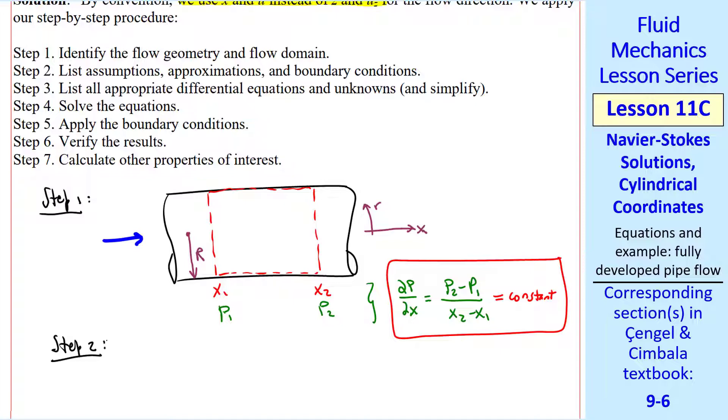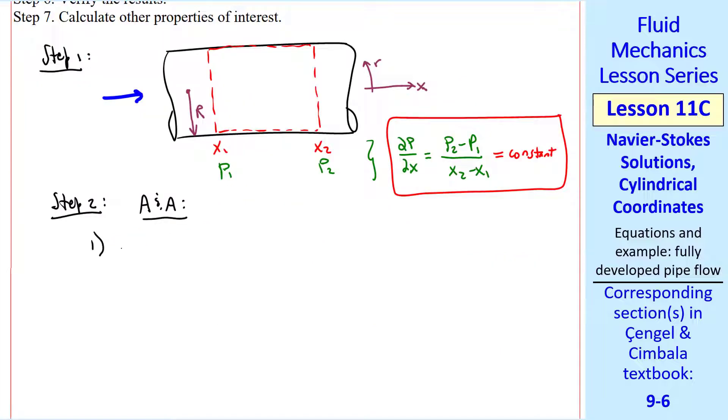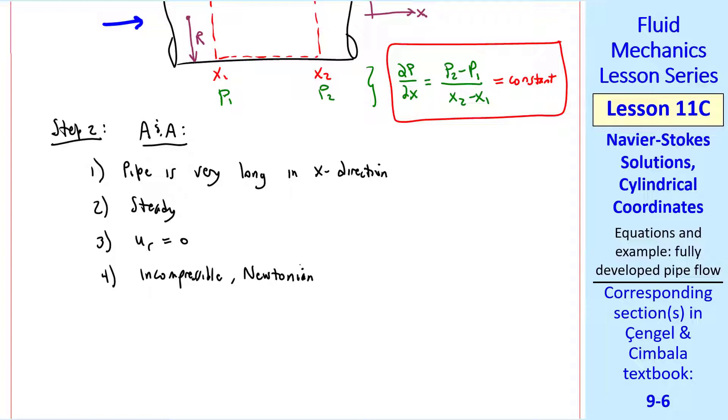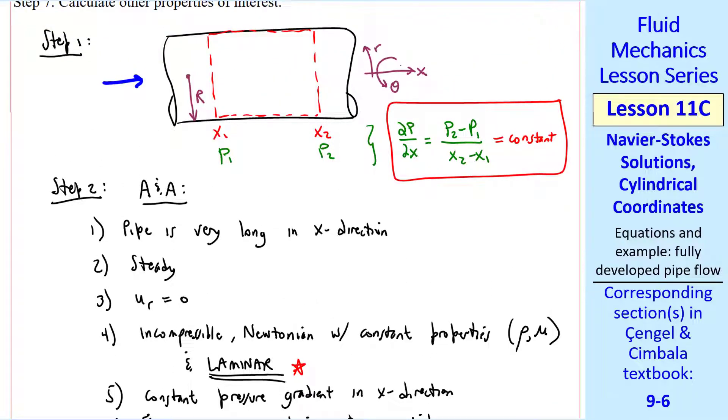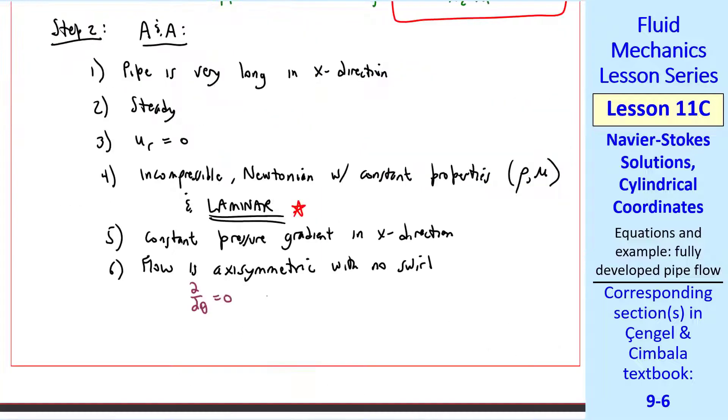Step two is to list all the assumptions and approximations. As I said previously, it's good to number your assumptions and approximations. Number one, the pipe is very long in the x direction, which allows us to make the fully developed approximation. The flow is steady. The radial component of velocity is zero. There's flow only in the x direction. The fluid is incompressible and Newtonian with constant properties, for example, density and viscosity. And laminar. It turns out that we're not able to do this kind of problem with turbulent flow. We can't get an analytical solution. But we will generate an analytical solution for laminar flow. Number five, we have a constant pressure gradient in the x direction, as we already discussed here. The flow is actually symmetric about the x-axis and there's no swirl. This means that nothing is changing in the theta direction. And uθ is zero. There's no swirl. ∂/∂θ of anything equals zero. And uθ equals zero. We ignore gravity in this problem.